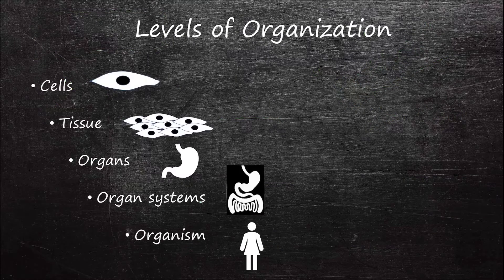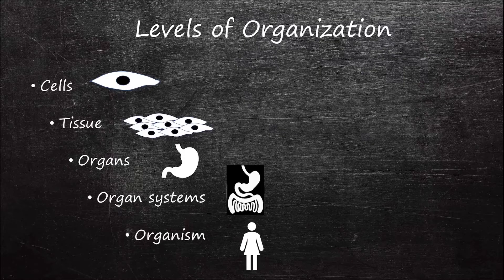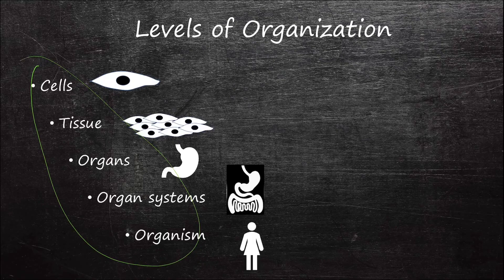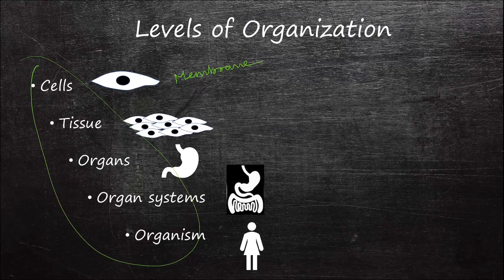Levels of organization. In this physiology course, we are going to study function at various levels of organization. For example, some topics like membrane transport will be at the cellular level, and some topics like peristalsis will be at the tissue level like smooth muscle tissue.